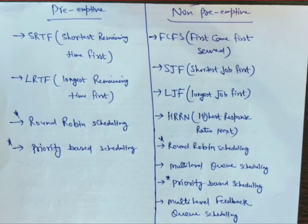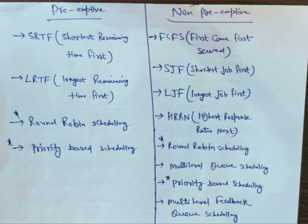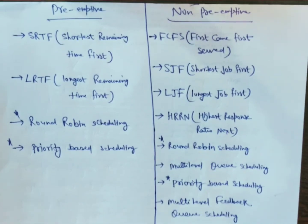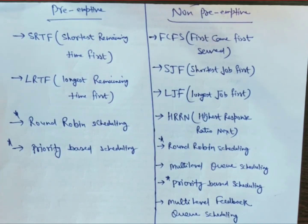For non-preemptive, we have: FCFS (First Come First Served), SJF (Shortest Job First), LJF (Longest Job First), and HRRN (Highest Response Ratio Next). Round-Robin and Priority-based scheduling can be both preemptive and non-preemptive. Multi-level Queue scheduling and Multi-level Feedback Queue scheduling are also important. We will discuss all of these scheduling algorithms one by one. The next topic will cover terminology used in scheduling algorithms — we will discuss that next. Thank you.